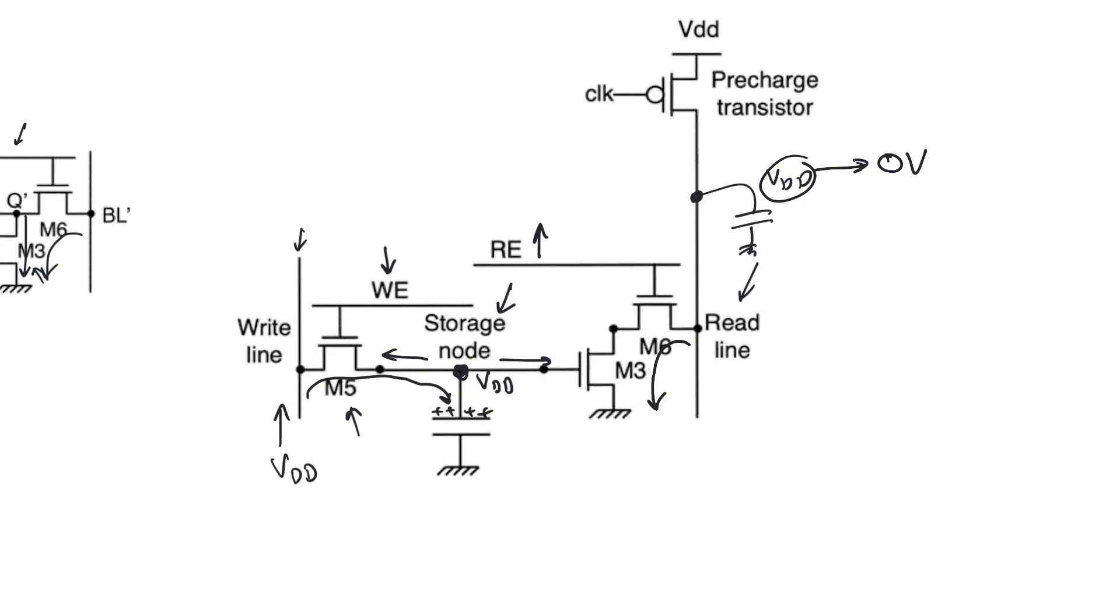Now if you, on the other hand, store a zero volt on the storage node, then the transistor M3 is always going to be off. Now what's going to happen is when you pre-charge the bit line and enable read-enable, M3 is going to be cut off, and therefore the read line is not going to be able to discharge, and it will remain at VDD. So storing a zero volt allows us to read a VDD, which means that we can store a value and read it, which is basically memory.